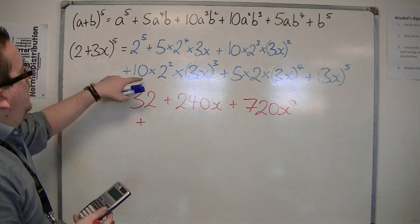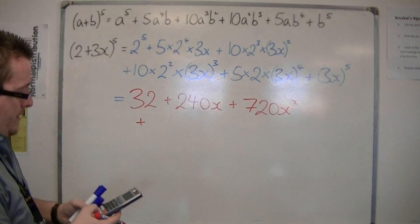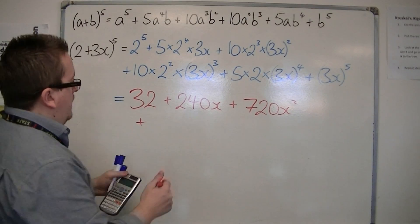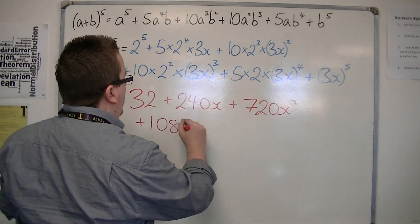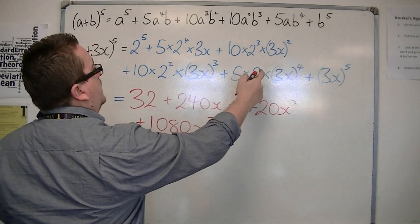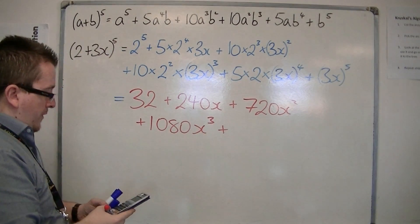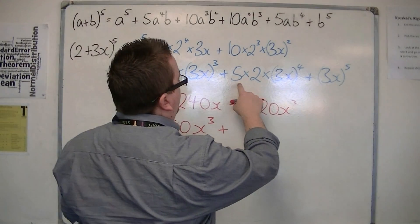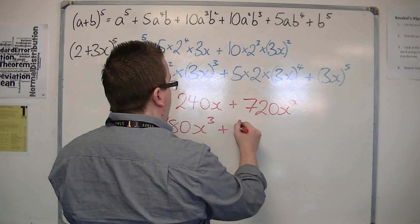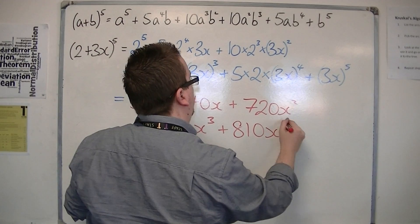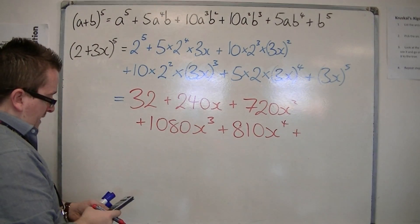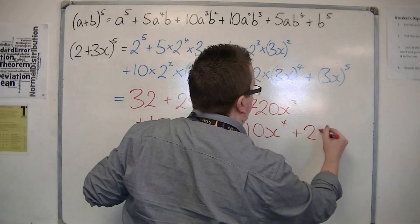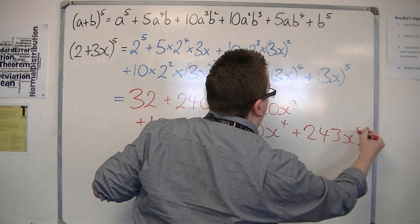Plus 10 times 2 squared times 3 cubed is 1080x cubed. Plus 5 times 2 times 3 to the 4, so 5 times 2 times 3 to the 4, that's 810x to the 4 plus 3 to the power of 5. So 243x to the 5.